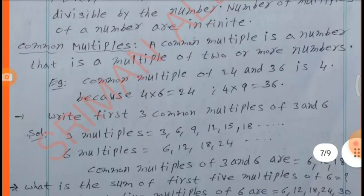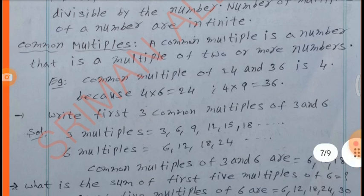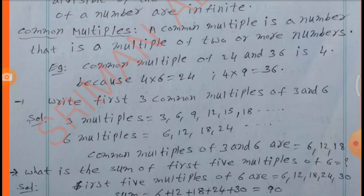Common Multiples: A common multiple is a number that is a multiple of two or more numbers. Example: 4 is a common multiple of 24 and 36 because 4×6 = 24 and 4×9 = 36. Therefore, 4 is the common multiple.